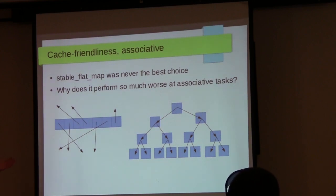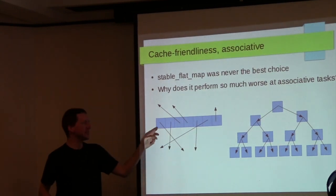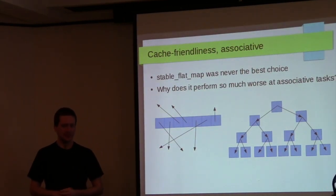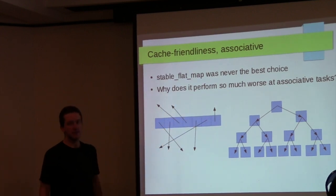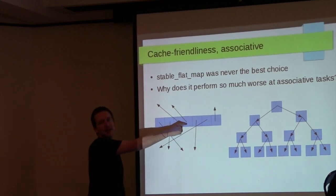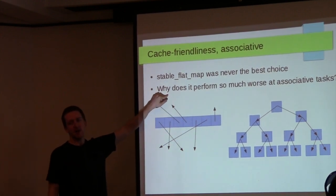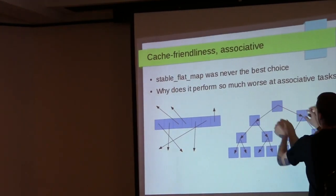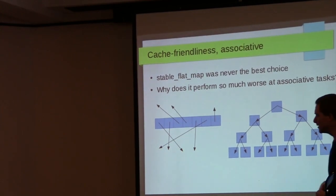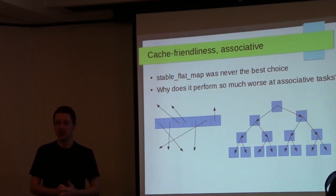Q&A on the diagrams: the unstable flat map (sorted vector) on the diagram would look like the map diagram but without separate arrows to data — the value is right there in the array, so you go to the middle element, the value is present immediately, and then you jump. No extra round trip to get the value for comparison.